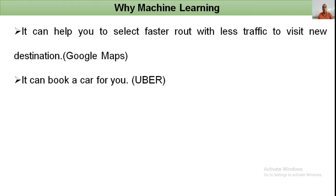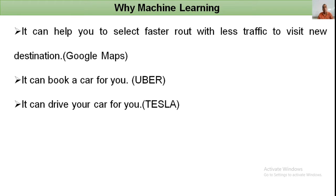Machine learning can book a car for you using the Uber app — you can see the nearest available vehicle and the cost required. It can also drive a car for you. Tesla is one self-driving car that uses machine learning techniques to drive without a human driver.